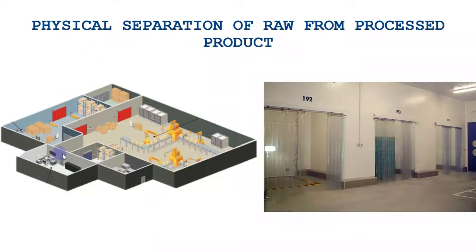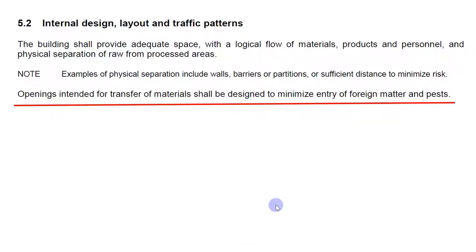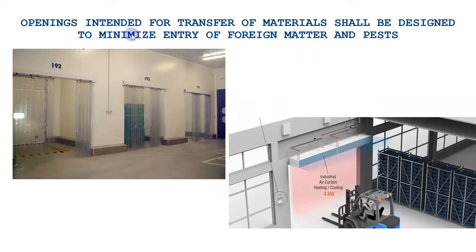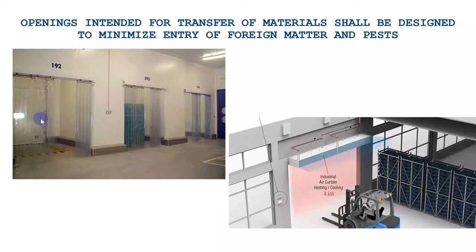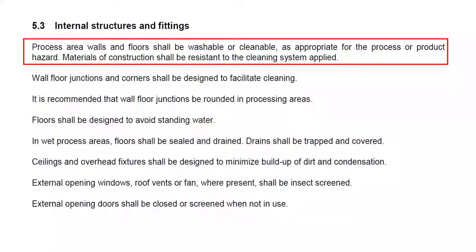Physical separation of raw material can be done by two methods: one is physical separation by building walls between different areas, or if that is not possible in your company, you can use plastic curtains to separate processed from raw material areas. Openings intended for transfer of material should be designed to minimize entry of foreign matter and pests. You can use plastic curtains on doors to minimize risk of pests like flies and foreign matter like dust, or alternatively use industrial air curtains.